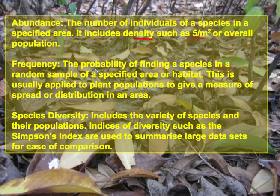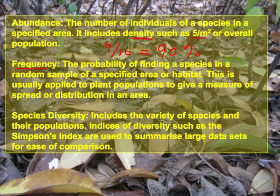Frequency is a technical term referring to the probability of finding a species in a series of random samples. For example, if you take 10 samples and find a sunflower 9 times out of 10, the frequency of that sunflower would be 9 out of 10, giving a frequency of 90%.